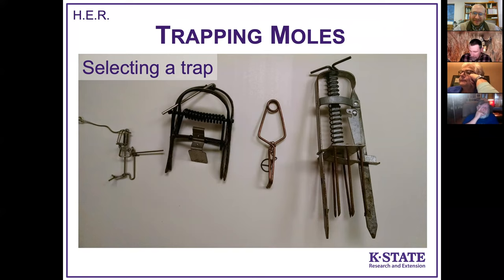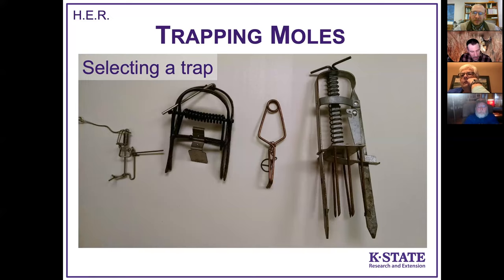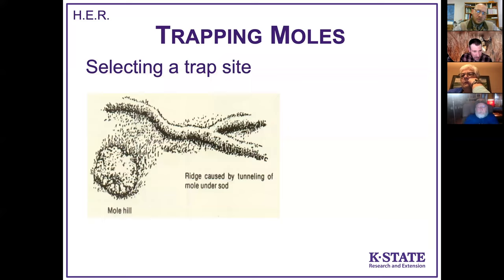If you want to deal with moles, you'll have to learn to trap. There are lots of different traps on the market. Harpoon-style or spear-type traps are very common and easy to find at stores like Orscheln's or Tractor Supply. The Trapline Products Mole Trap is also very effective. The Victor Out-of-Sight Mole Trap is the one K-State Research and Extension has used most when helping people with mole problems, and it's what you'll see in upcoming pictures.